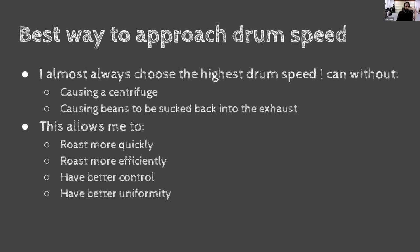My approach to drum speed: I almost always choose the highest drum speed I can without causing centrifuge or beans being sucked into the exhaust, because I want to maximize the energy I'm pulling from the air. It allows me to roast more quickly, more efficiently, with better control and better uniformity. If drum speed is too low, you can actually have coffee that's already roasted alongside coffee still roasting, because agitation is insufficient, there's too much contact with the drum surface, and not enough convection.